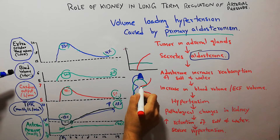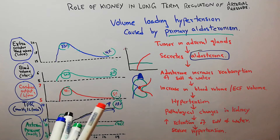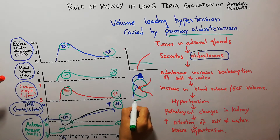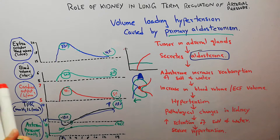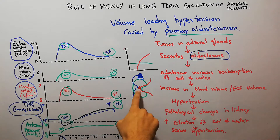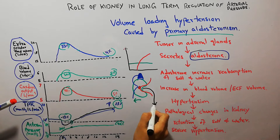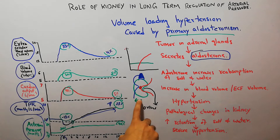Useful nutrients get reabsorbed from the filtrate in the renal tubules present in the kidney, while waste material goes down in the form of urine.